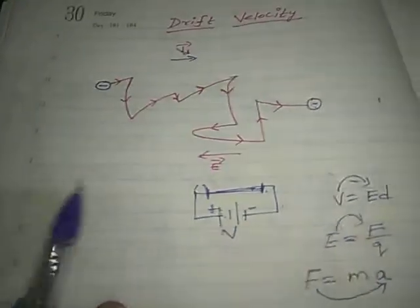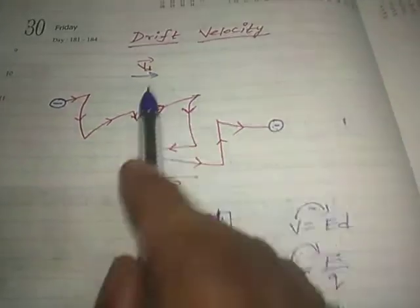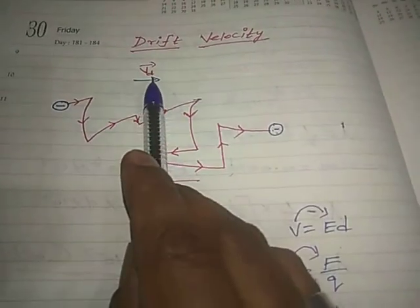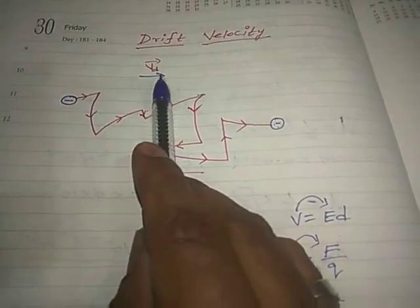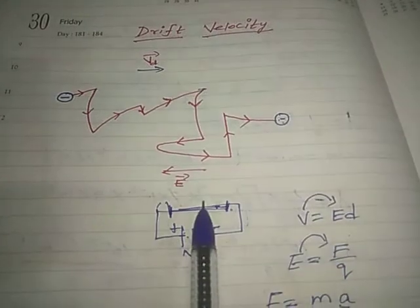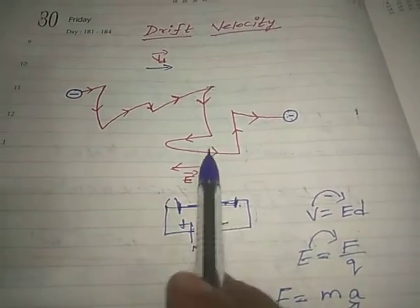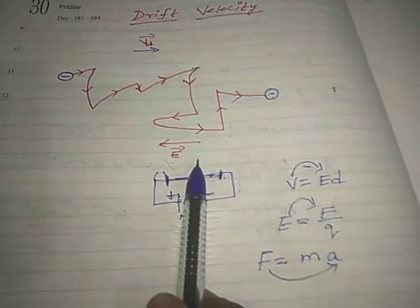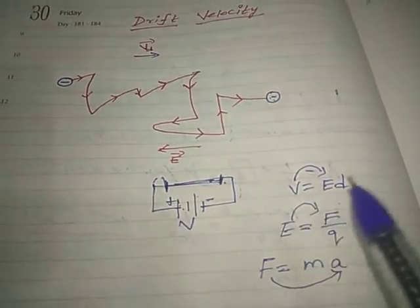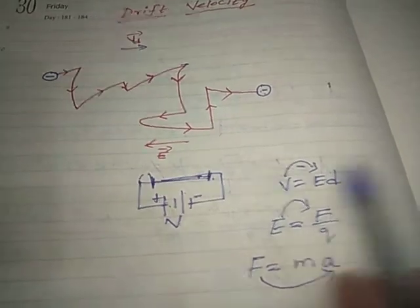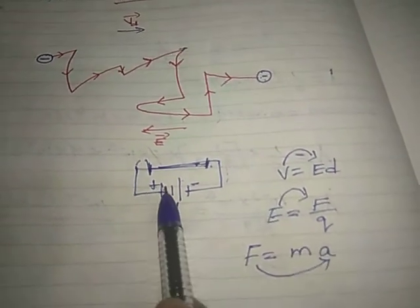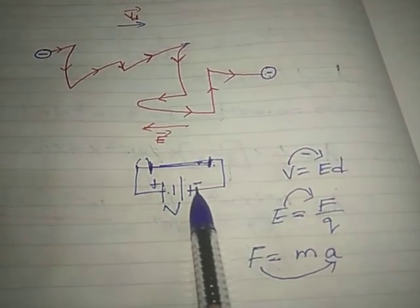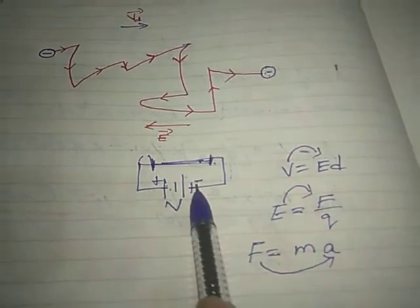Drift velocity is the velocity with which free electrons get drifted towards the positive terminal of the battery when the electric field is applied.